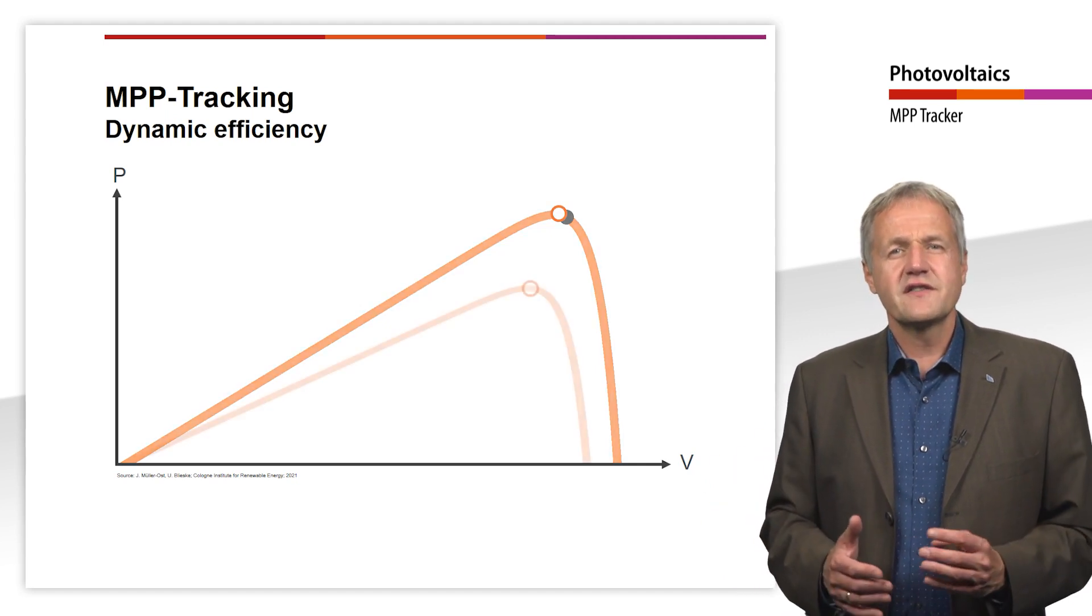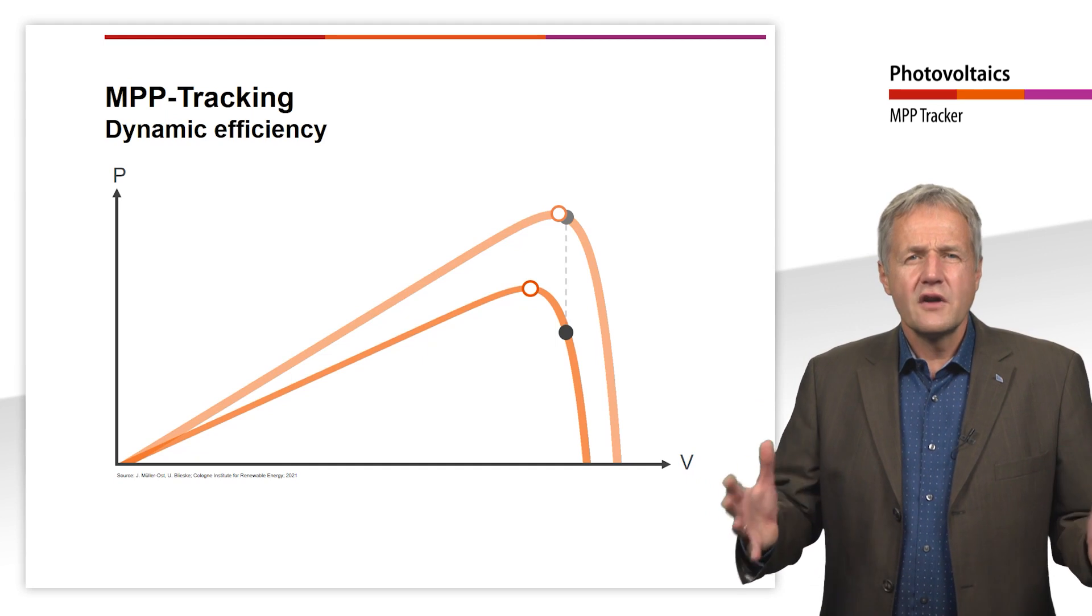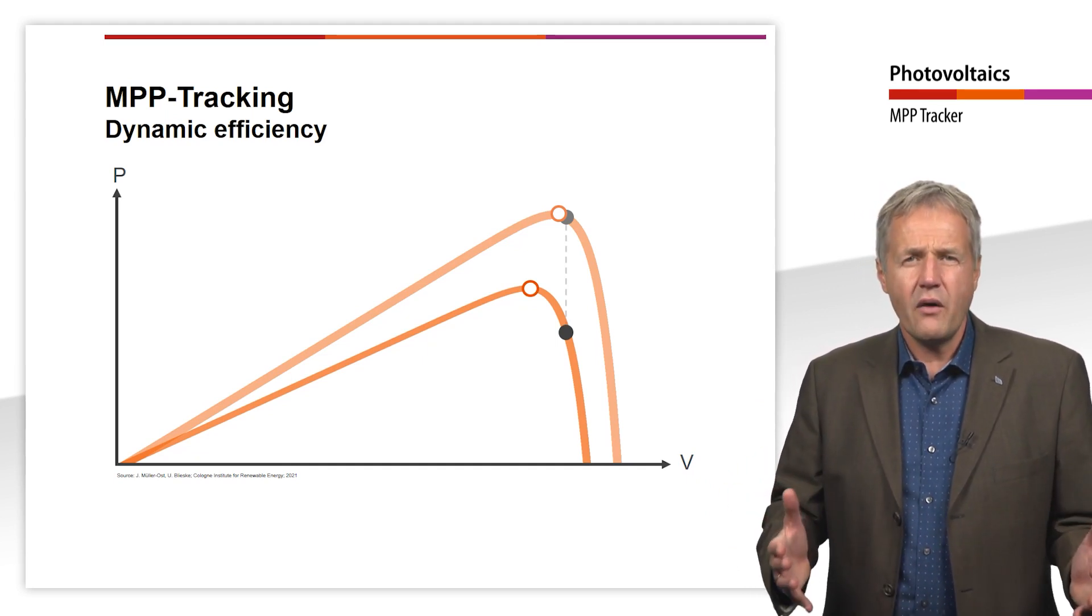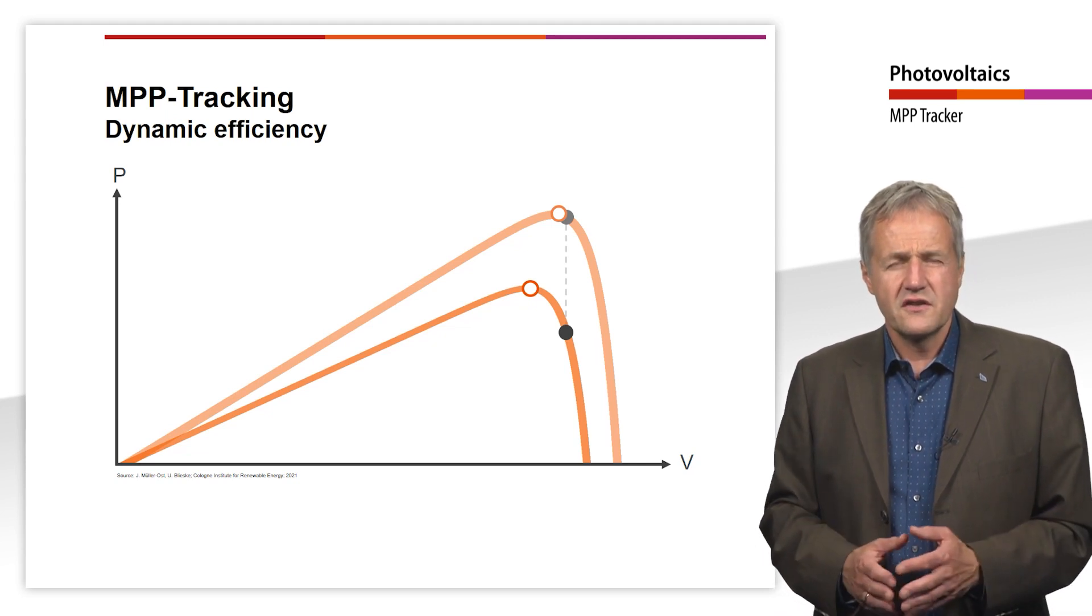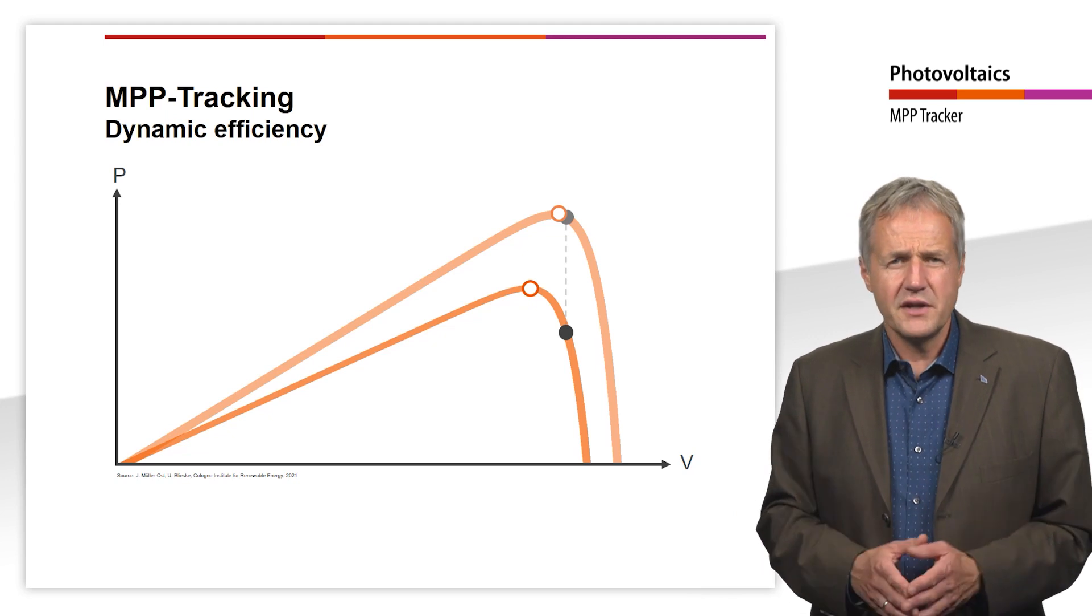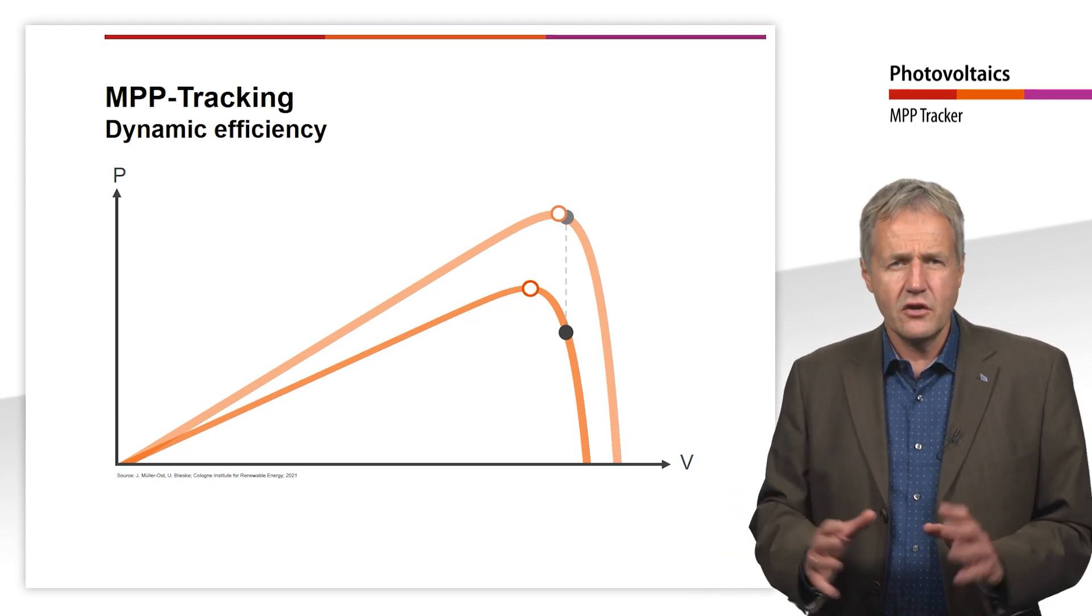As a result, the characteristic of our module also changes. With the old MPP voltage, the module no longer delivers the maximum power under the new conditions. In this case, the MPP tracker needs a short time to find the new MPP. Changing environmental conditions therefore lead to additional losses.